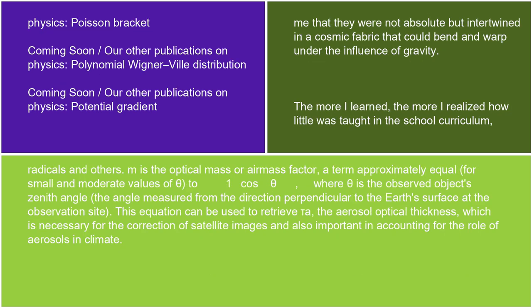M is the optical mass or air mass factor, a term approximately equal, for small and moderate values of θ, to 1/cos(θ), where θ is the observed object's zenith angle — the angle measured from the direction perpendicular to the Earth's surface at the observation site. This equation can be used to retrieve τ_A, the aerosol optical thickness, which is necessary for the correction of satellite images and also important in accounting for the role of aerosols in climate.